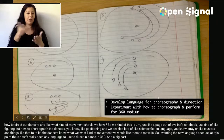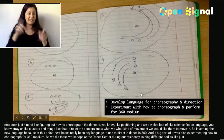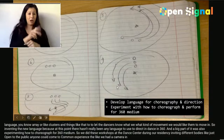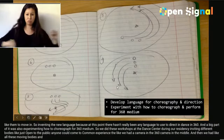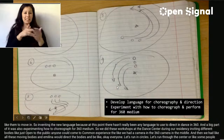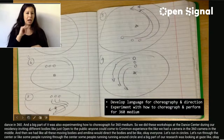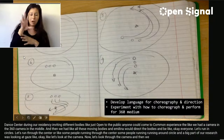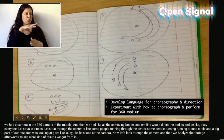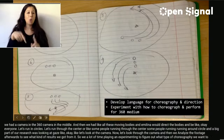A big part of our research was experimenting with how to choreograph for the 360 medium. We did workshops at the Dance Center during our residency, inviting different bodies — open to the public. We had a 360 camera in the middle with all these moving bodies, and Emelina would direct them: everyone run in circles, run through the center, some people in a circle. A big part of our research was studying gaze — looking at the camera, looking through it — then analyzing the footage afterwards. We spent a lot of time playing and experimenting to figure out what type of choreography to include in our final film.